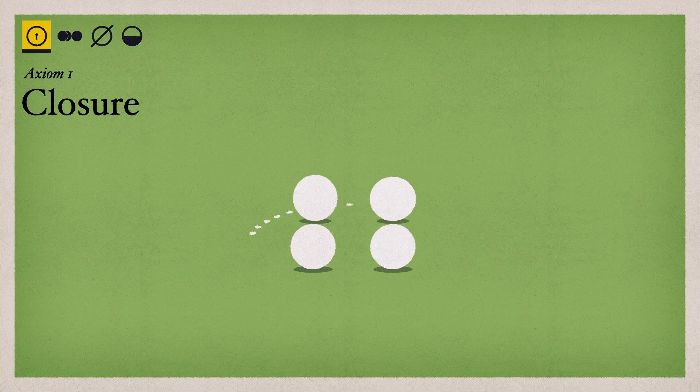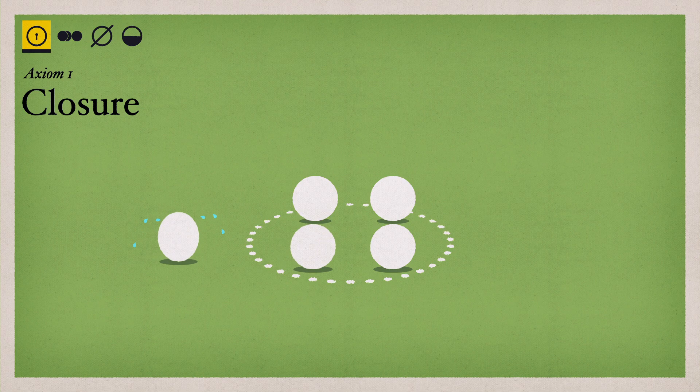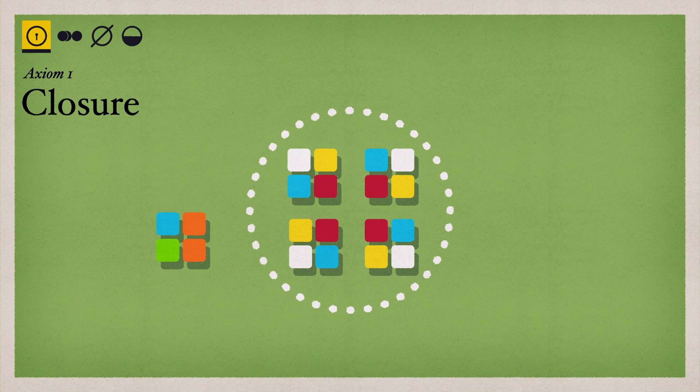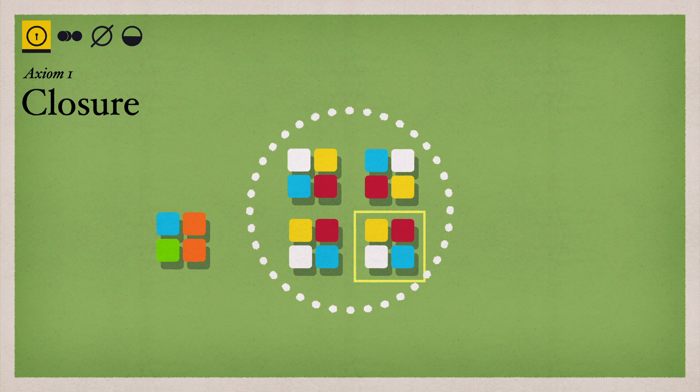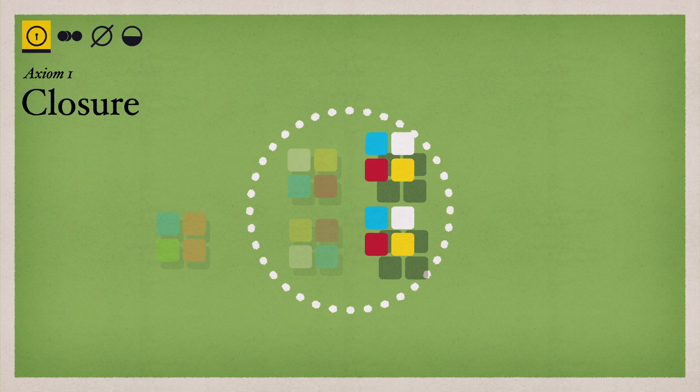Axiom 1: All group operations must be closed or restricted to only group elements. So in a square, for any operation you do, like turn it one way or the other, you'll still wind up with an element of the group.